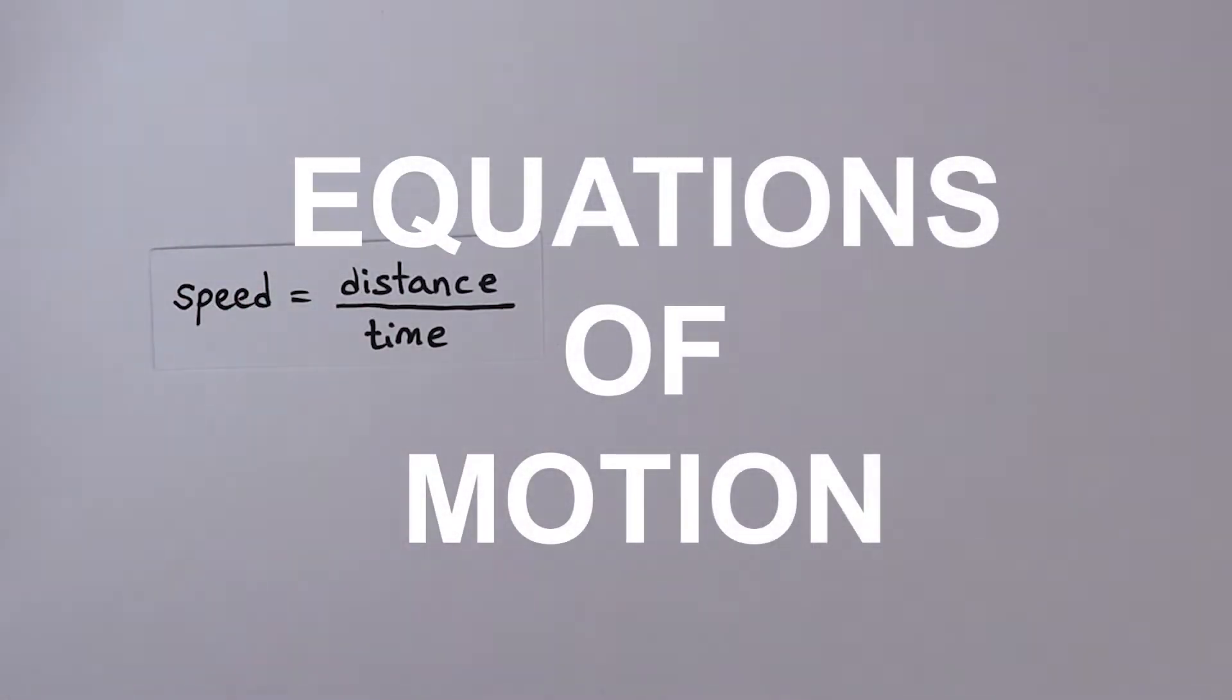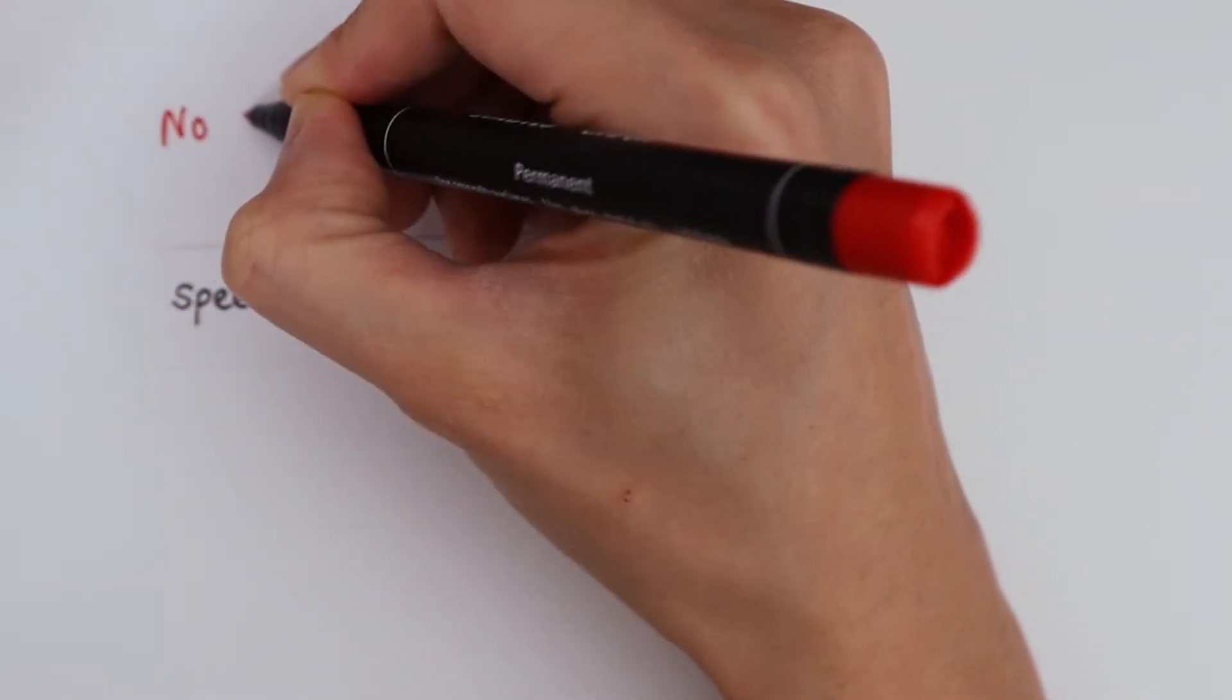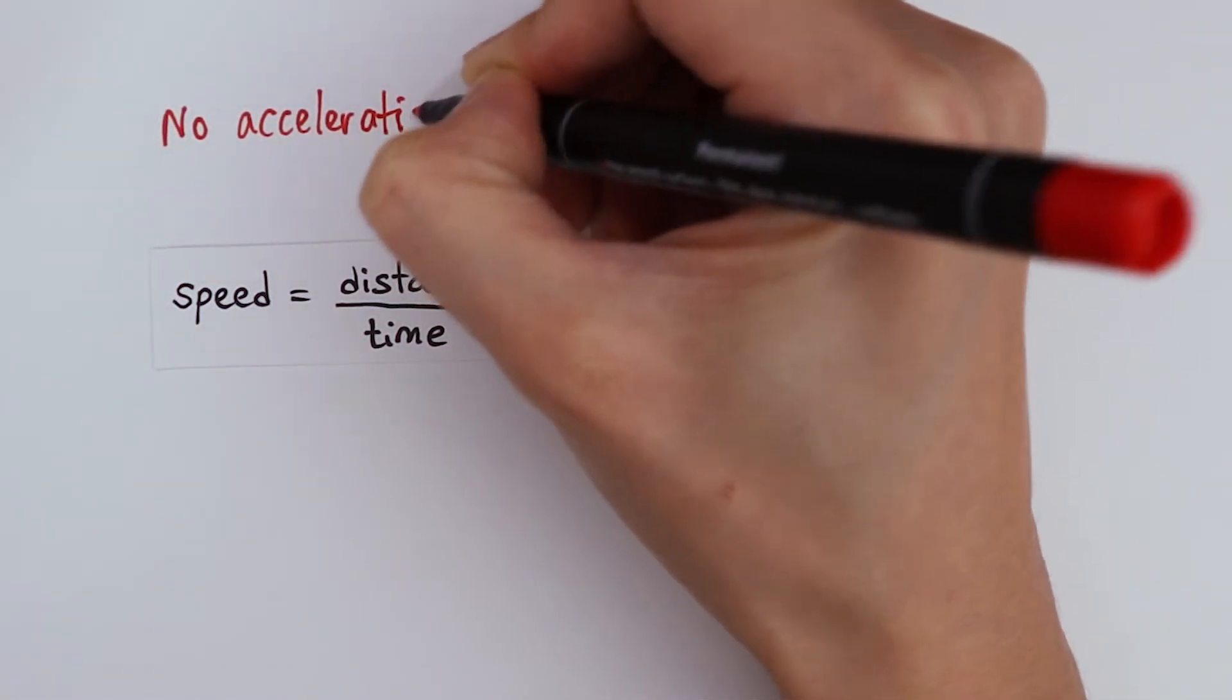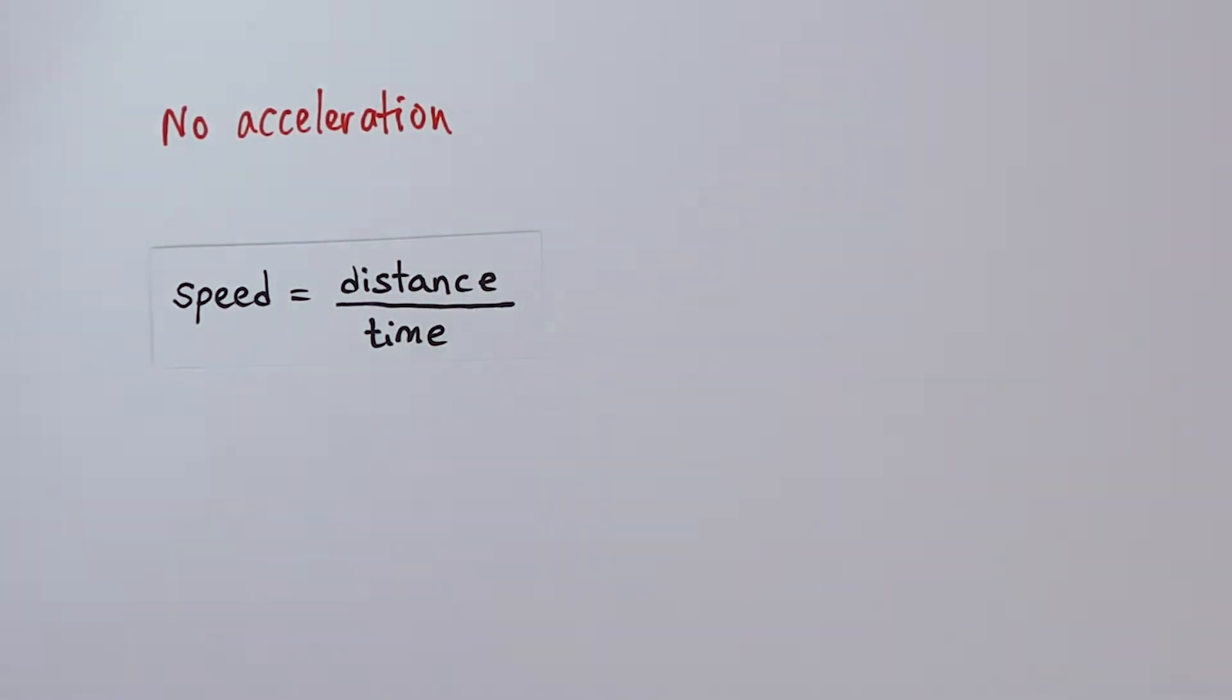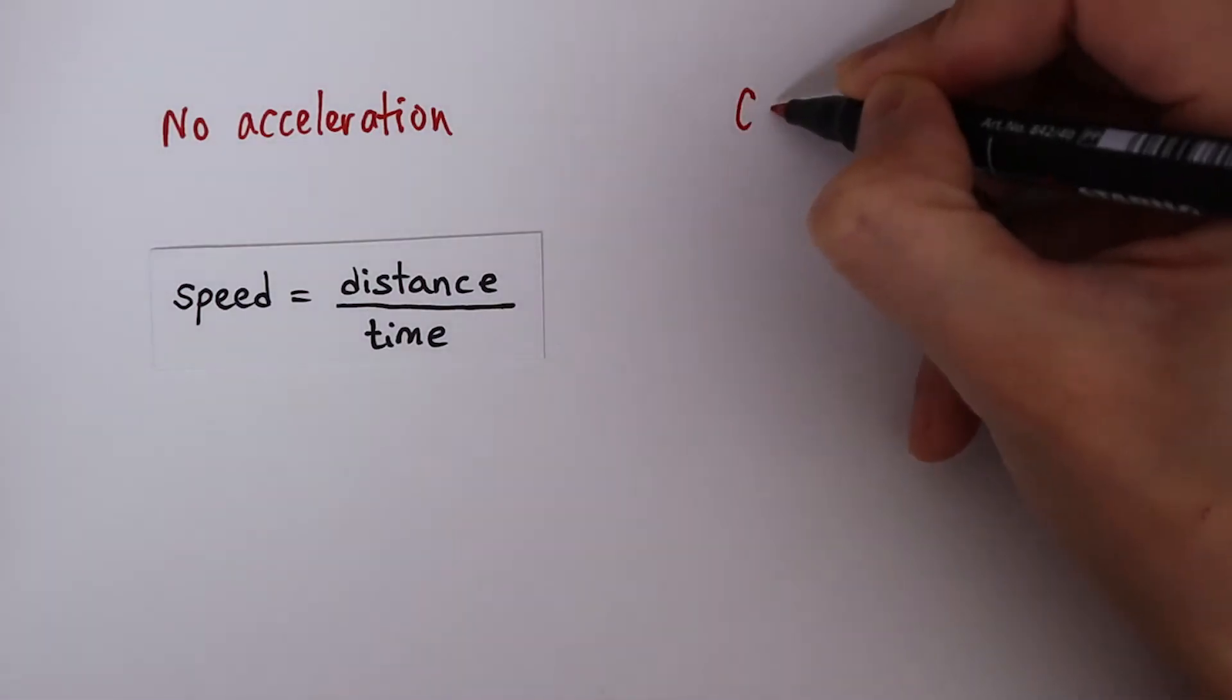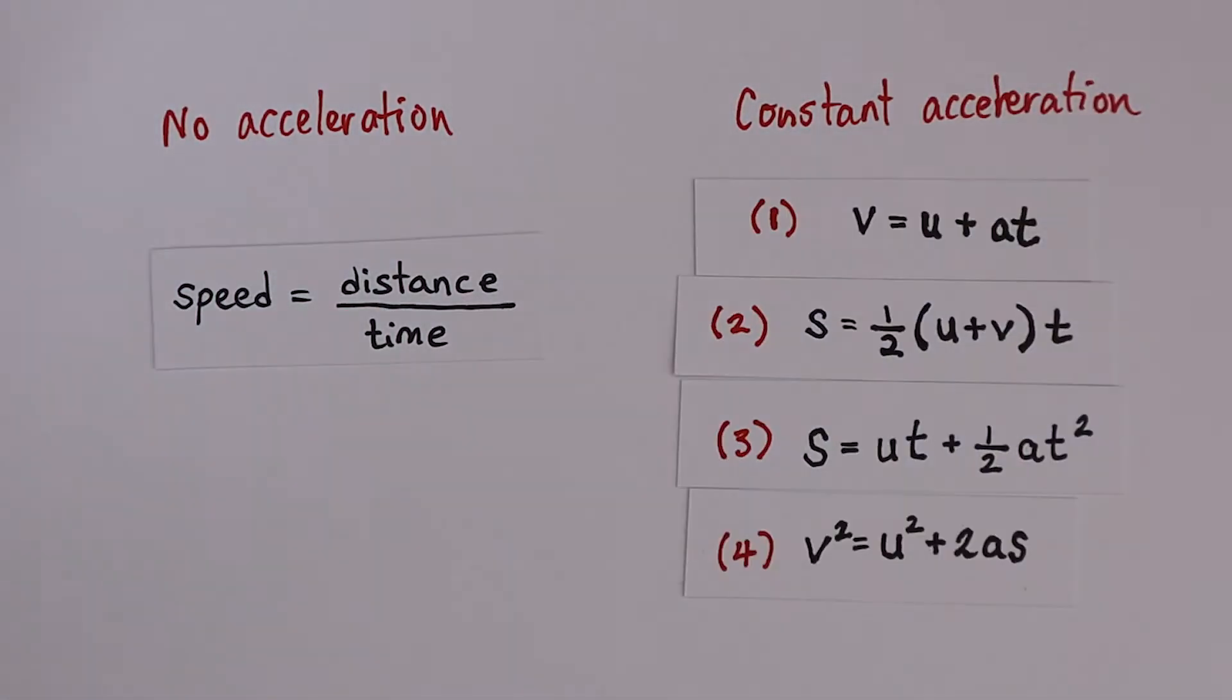You must be familiar with the equation speed is distance over time, but this equation is only applicable to a traveling object with no acceleration. It is no good for when we need to consider acceleration. There are four equations to describe an object traveling with constant acceleration.